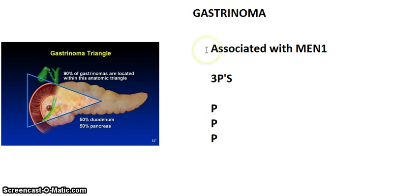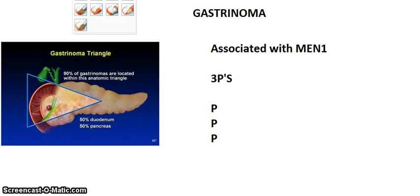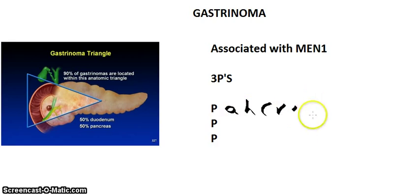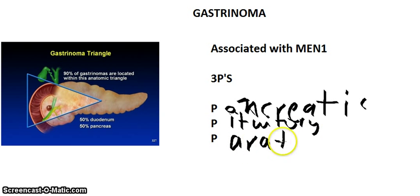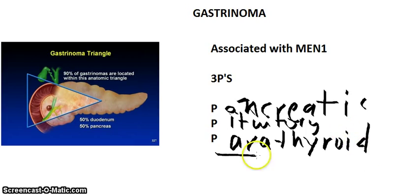Gastrinoma is associated with MEN1. MEN1 is associated with three P's: the first P is for pancreatic tumors, the second P is for pituitary tumors, and the third P is for parathyroid tumors. So in anyone with gastrinoma, make sure you check their parathyroid levels and do an MRI of the brain to check for abnormalities in the sella turcica.